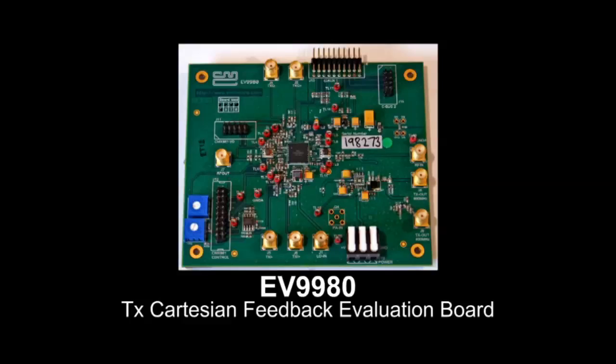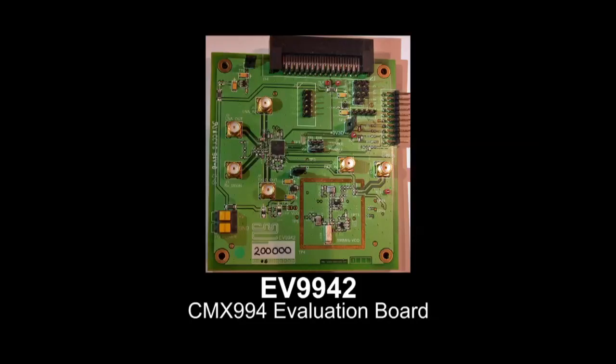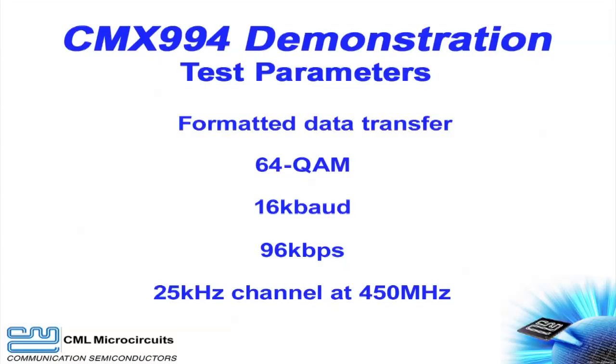For RF transmit, we will use the CMX998 Cartesian feedback loop IC and its evaluation board, the EV9980. Since QAM is a linear modulation scheme, the ability of the CMX998 to linearize an RFPA makes it a great choice for this test. And for RF receive, we will use the CMX994 direct down conversion receiver and its evaluation board, the EV9942. In today's video, we will pass formatted data using 64 QAM and 16 KBaud, and this provides a 96 kilobit per second over the air data rate. We will also use a 25 kilohertz RF channel centered at 450 megahertz.